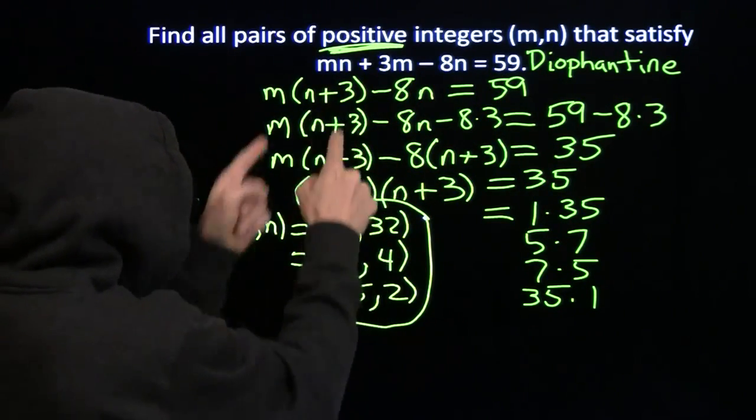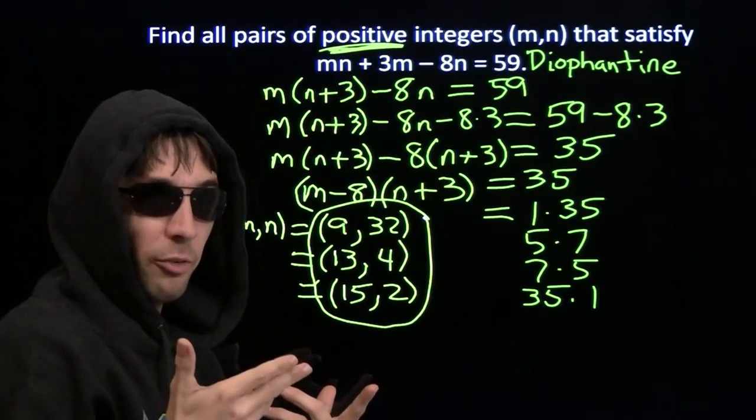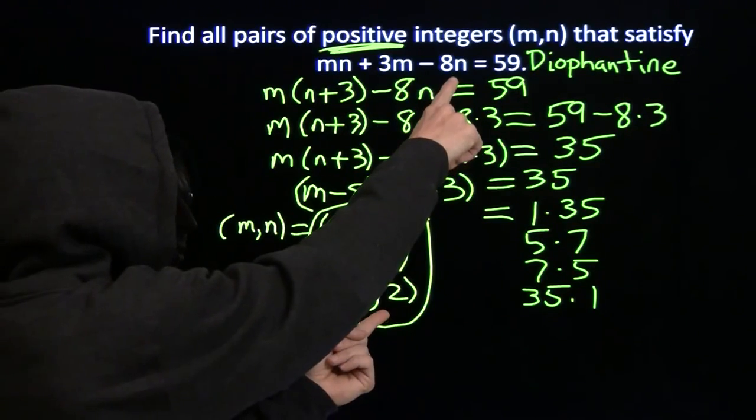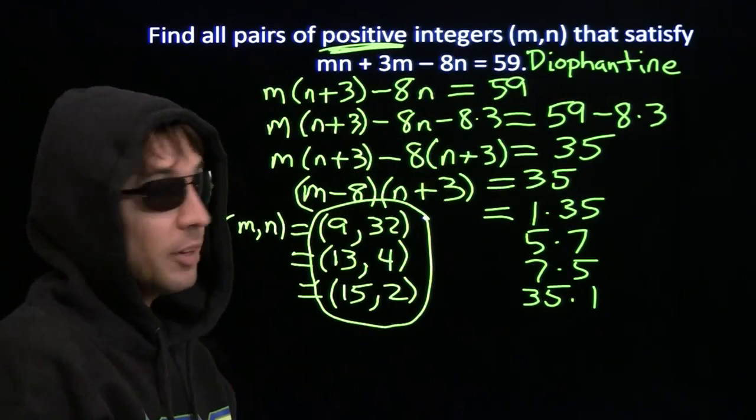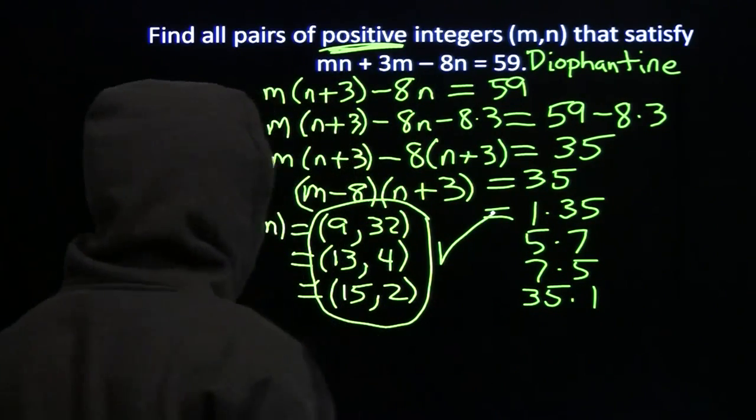Put in these two, 15 and 2. 15 times 2 is 30. Plus 3 times 15, that's another 45. That brings us up to 75. 75 minus 8 times 2, 75 minus 16, 59. All three work. These are correct.